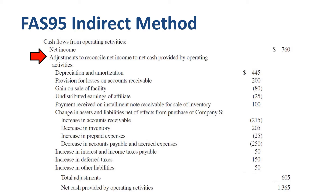The next step in the indirect method is to look for any non-cash items from the P&L. In this example, the main non-cash item is depreciation and amortization, which is 445 million. You deduct the depreciation as an expense in order to report the correct amount of EBIT and profit before tax in the income statement, and to calculate the correct amount of corporate income taxes. For cash flow purposes, you will have to add back that same amount of depreciation.